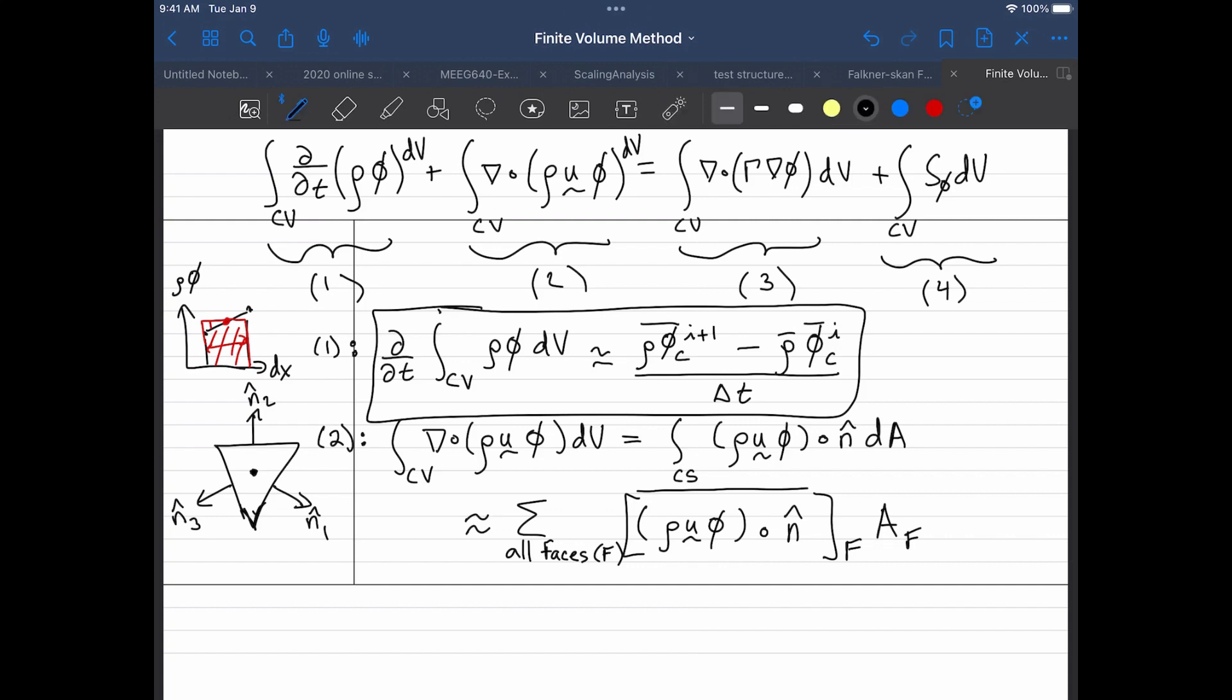So here's the basic idea: we'll break this out and we will write this as the density at the face, the sum over all the faces of the density at the face, the correct average value of u dot n on the face, the correct value of phi on the face, times the area of the actual face.